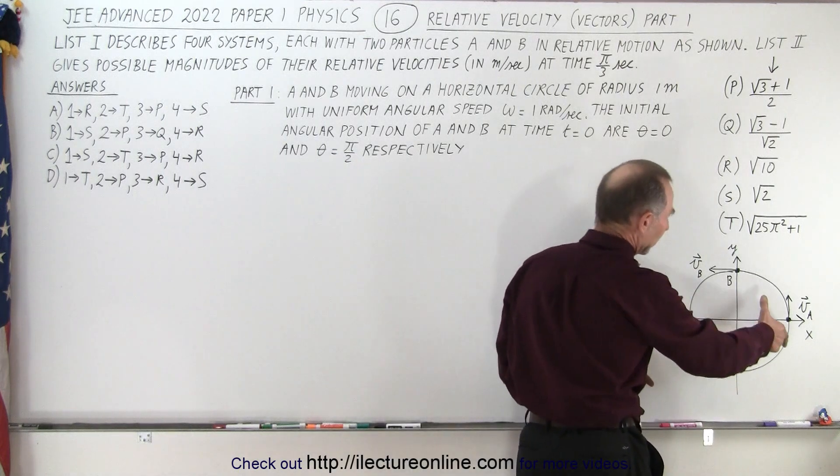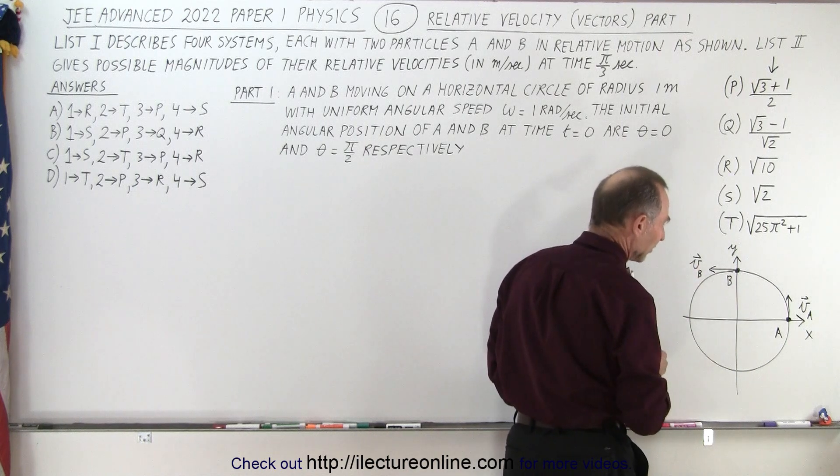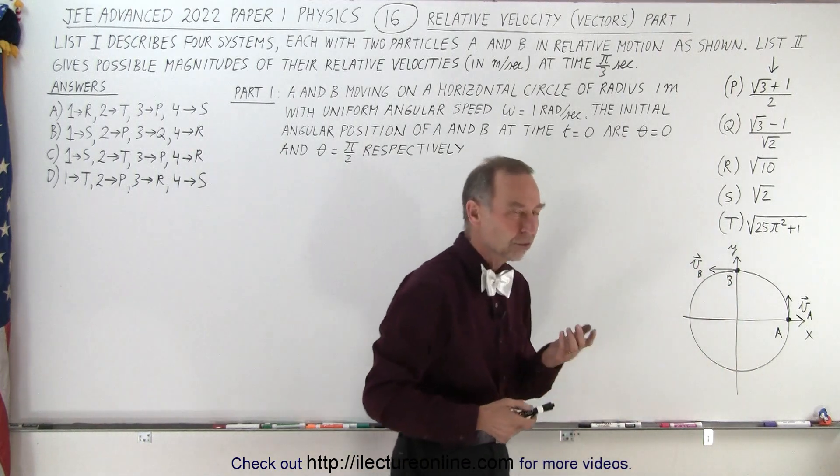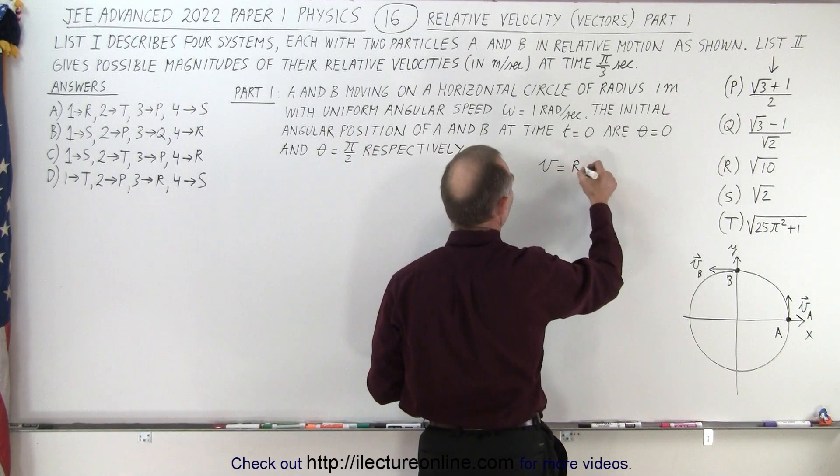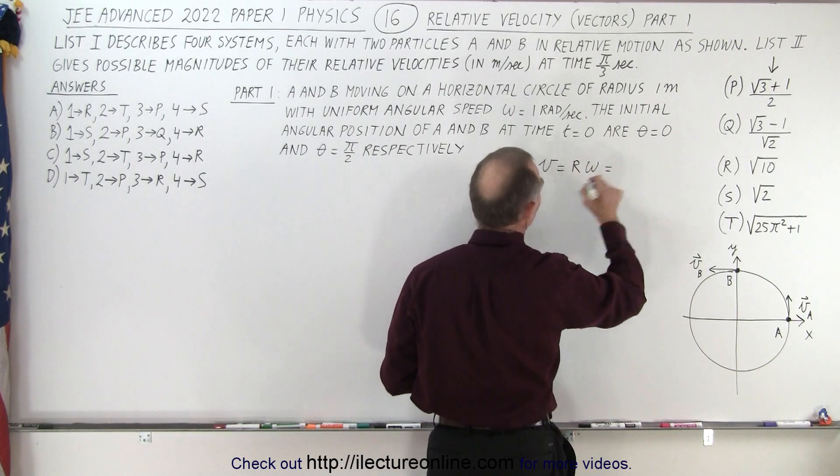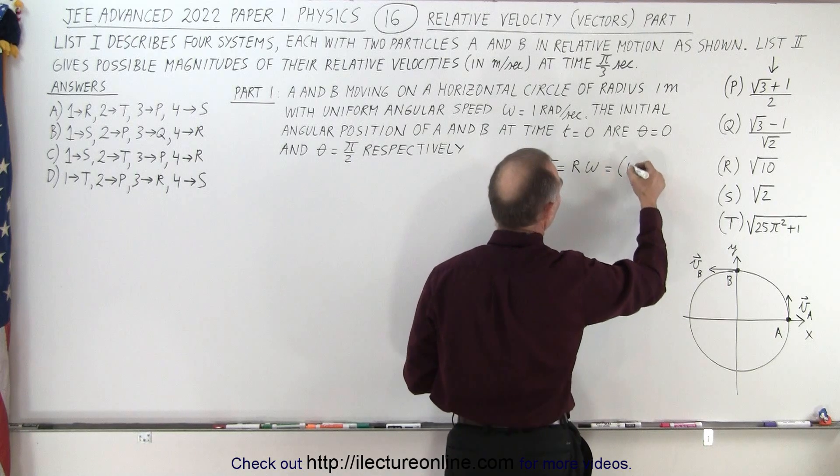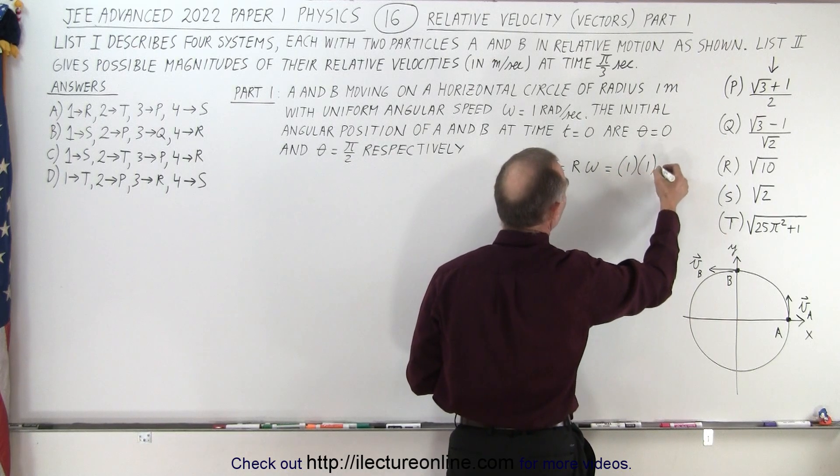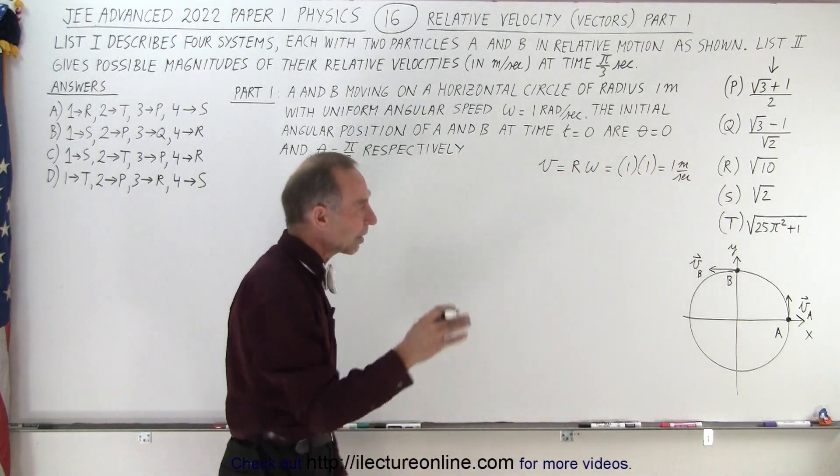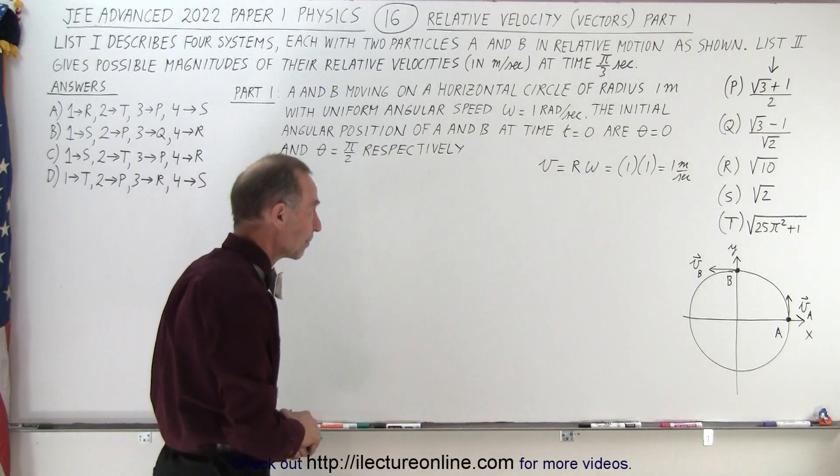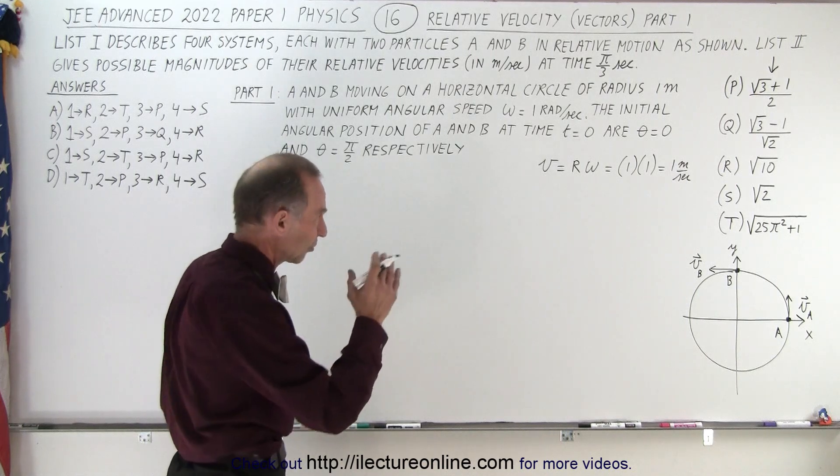At time equals zero the particles are here, then they start moving at the same angular velocity of 1 radian per second and the radius is 1 meter. We know that their velocity is equal to R times ω. So V = Rω, where R = 1 meter and ω = 1 radian per second. So we get 1 meter per second is the velocity, the magnitude of velocity for A and B. We can ignore the units just to make things easy.